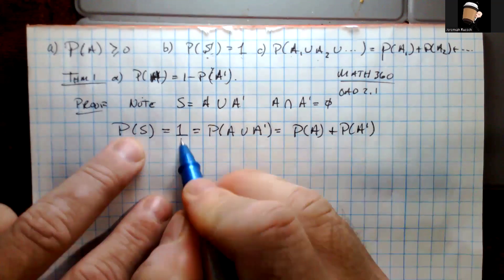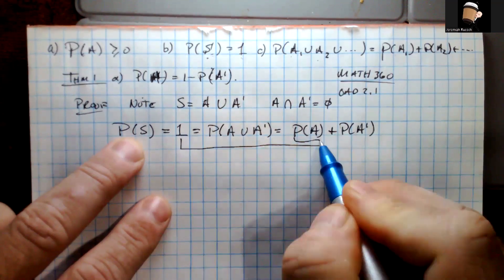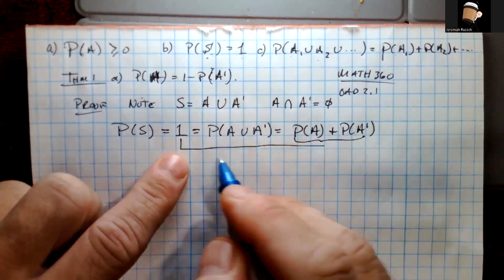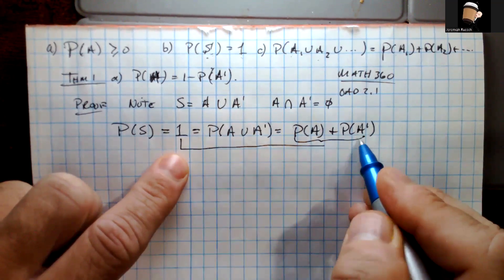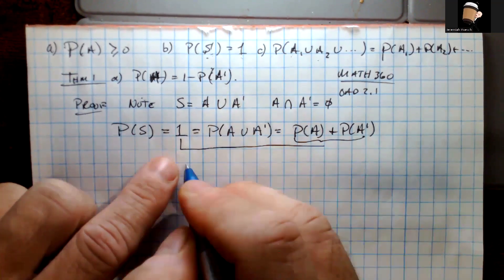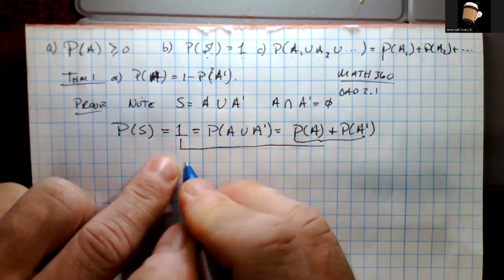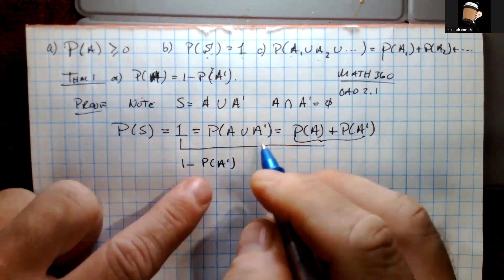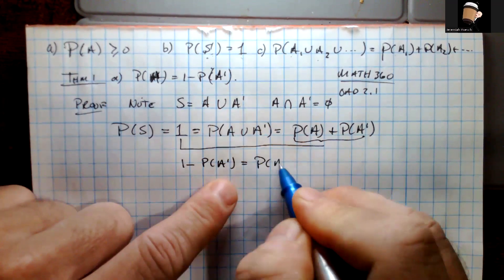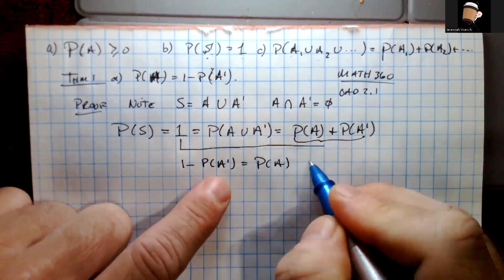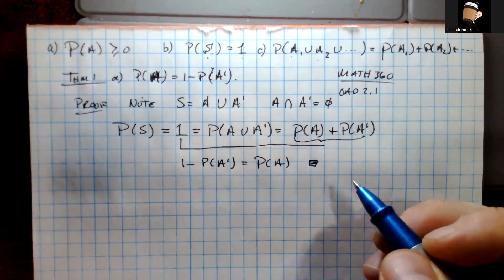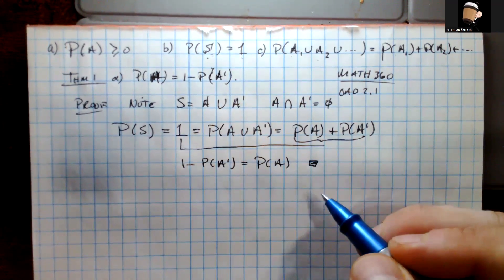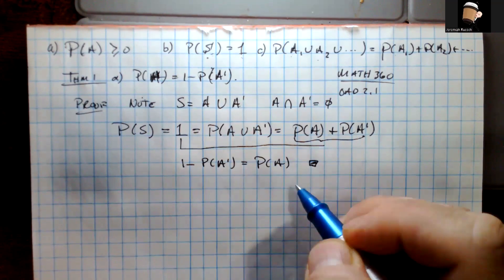We have exactly what we need. All we need to do is move P(A-complement) to the other side — subtracting it from both sides — giving us one minus P(A-complement) equals P(A), which is exactly what we wanted to show. Now we're going to jump to part B in our next proof.